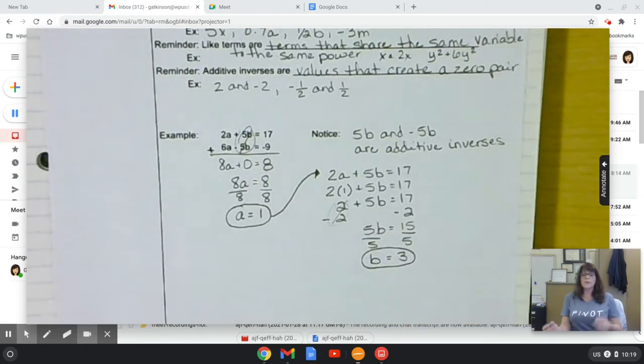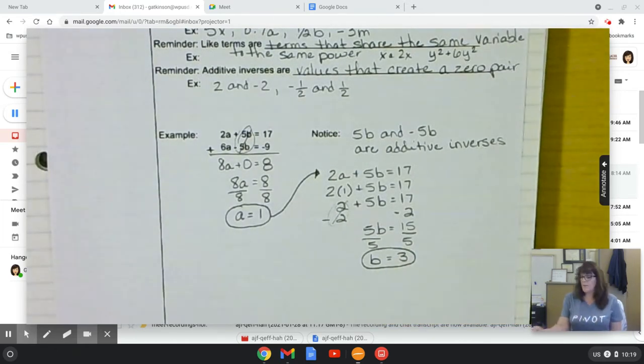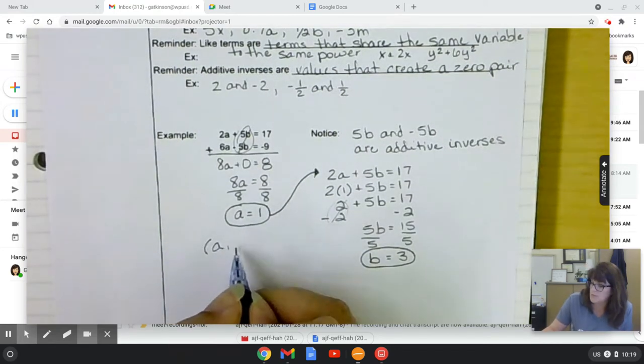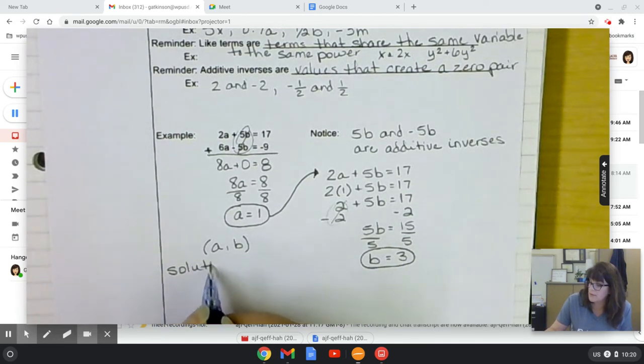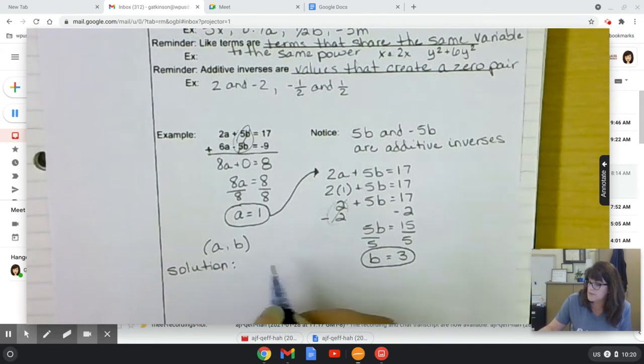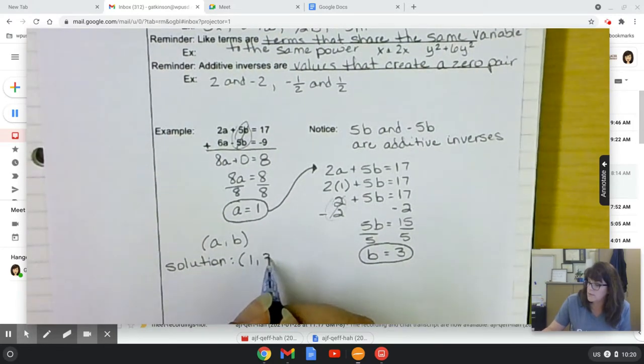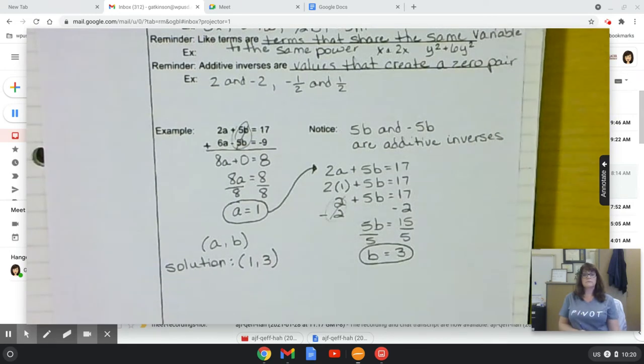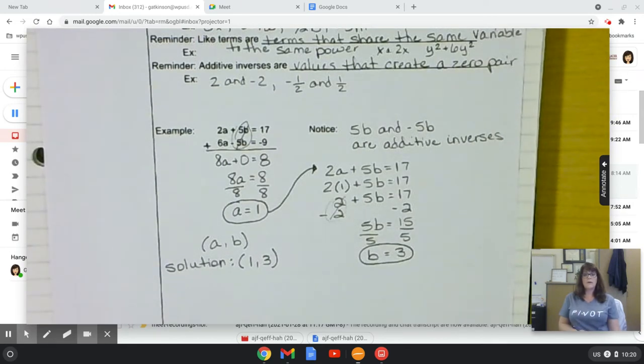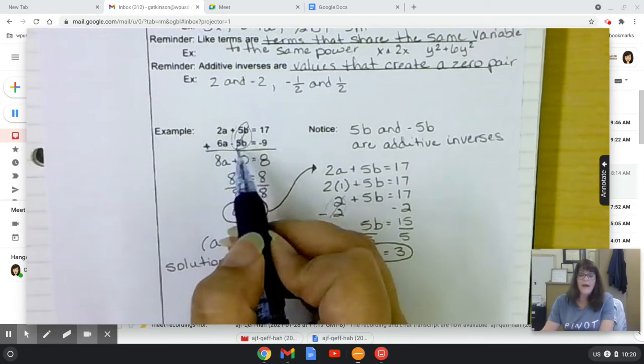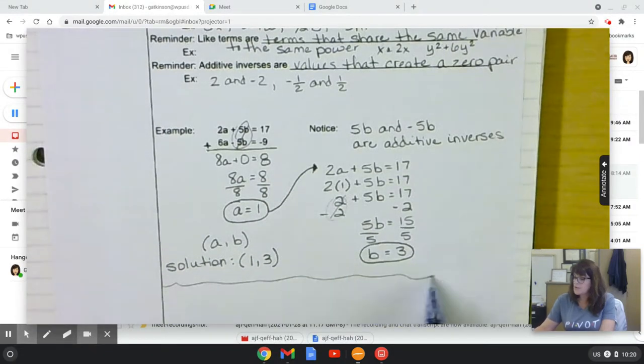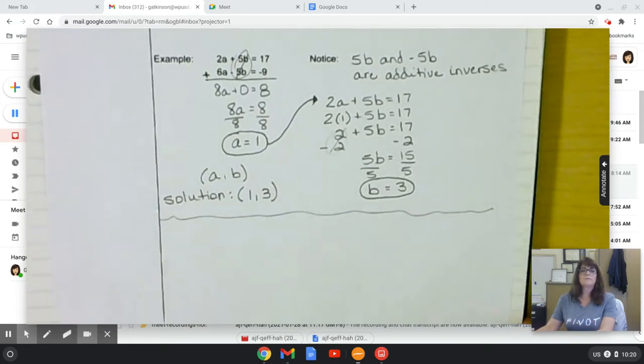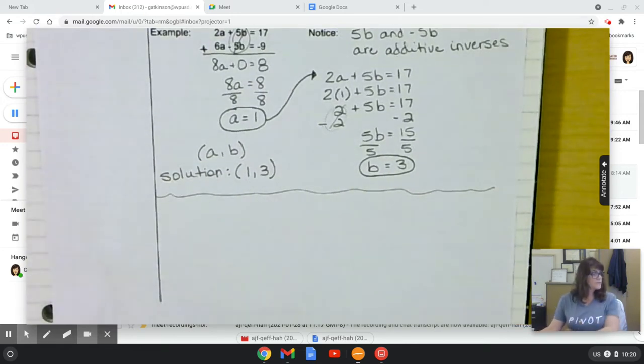And remember, when we write a coordinate pair, we do it in alphabetical order. So in this case, a, b. So our solution is 1, 3. And so we use this method when we already have additive inverses that are so easy. Now I want to show you one more layer. One more level.